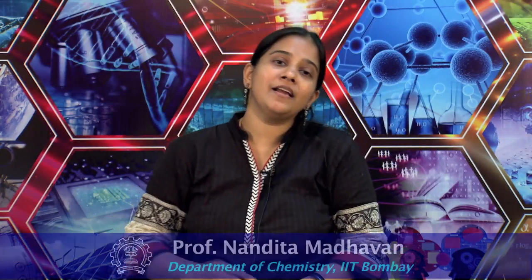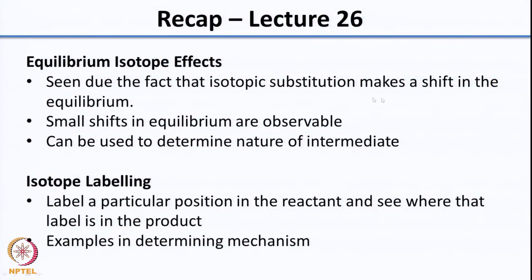Welcome back. In the last class we had looked at equilibrium isotope effects, seen due to the fact that isotopic substitution makes a shift in the equilibrium. We had seen that very small shifts in the equilibrium are also observable, and we could get very small perturbations to be measurable, which could be used to determine the nature of the intermediate. We had seen the example of a rapid equilibrium versus a symmetric intermediate which is resonance stabilized.